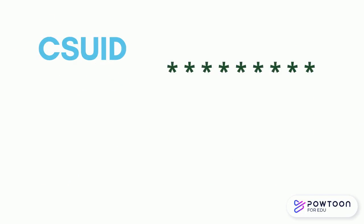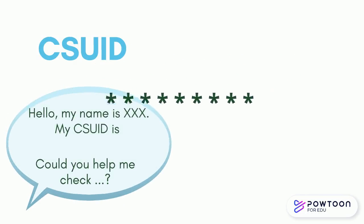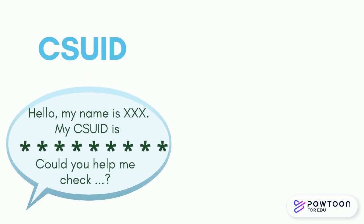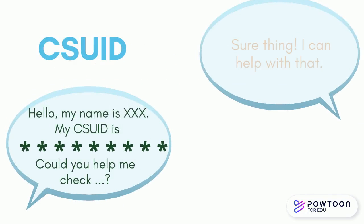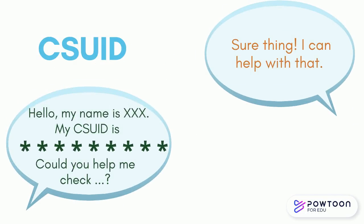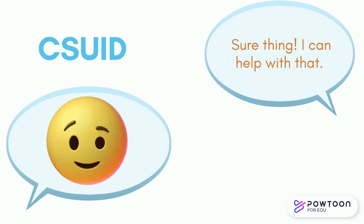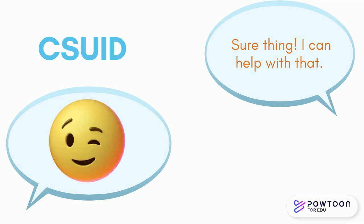CSUID is a 9-digit student ID number. It is wise to include your CSUID in communication with any campus offices so they can find your information in the system and provide you with the support you need.